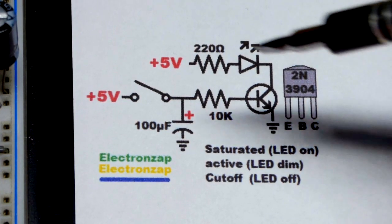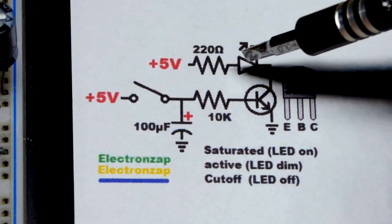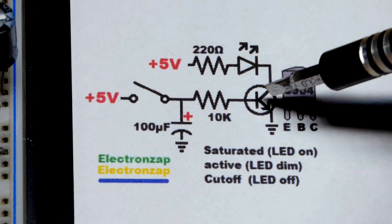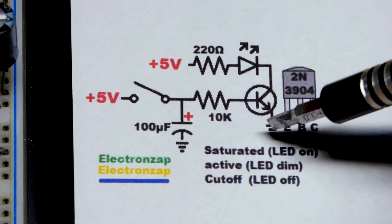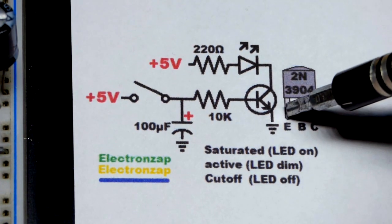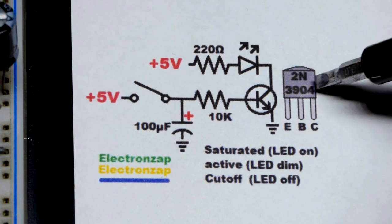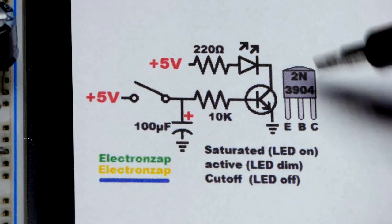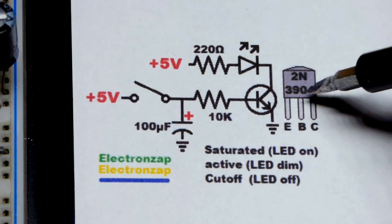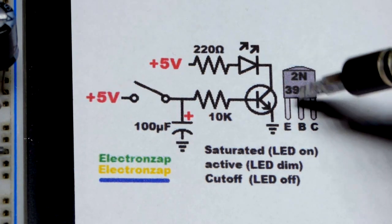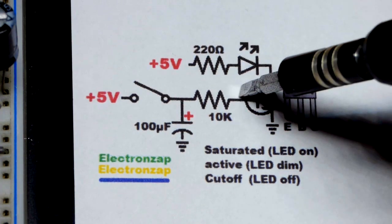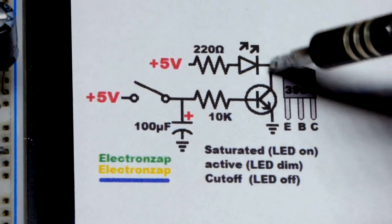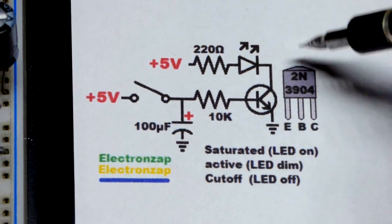As you can see in the schematic, the current path for the protective resistor and LED is through the collector and emitter to ground. If you're using a 2N3904 or any other bipolar junction transistor that starts with 2N, the left pin is emitter, middle pin is base, and right pin is collector. I always look up the data sheet to verify.